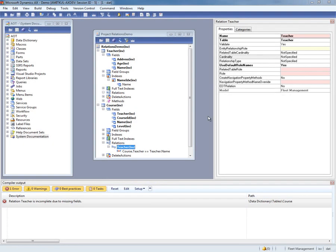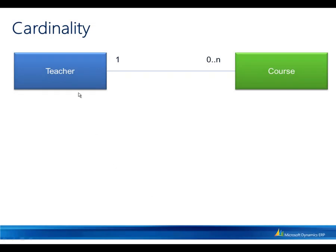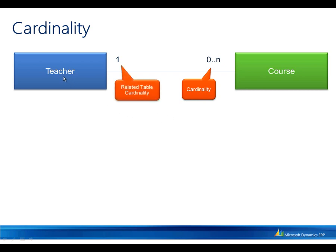The first set of properties that we are going to take a look at are cardinality and related table cardinality. Notice that the relation is defined on the course table. The course table is the table that holds the foreign key. In our conceptual model, one teacher can teach many courses. However, a course must have exactly one teacher. The cardinality on the side of the course is defined by the cardinality property in the AOT. The cardinality on the teacher side is defined with the related table cardinality property in the AOT.